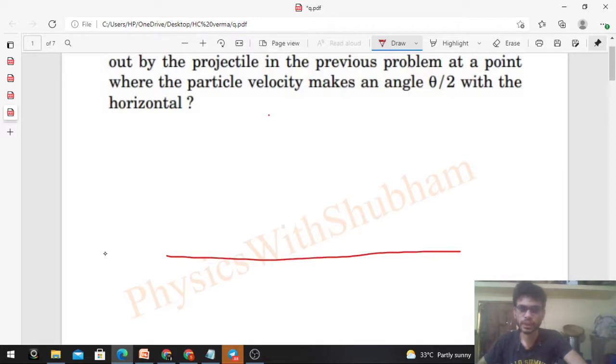This is the second part. In the first part we discussed earlier, you have an object at angle theta, u-velocity projected, in projectile motion. We need the radius of curvature at a point where your velocity vector is at angle θ/2.